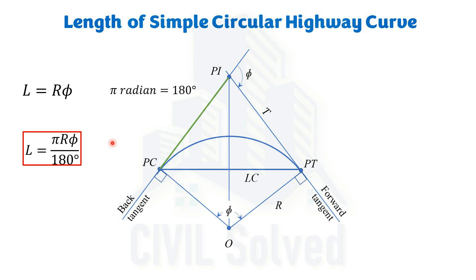So from all the distances we have calculated, in each formula we have observed that radius R and deflection angle φ are the two variables. So if we know the basic data — radius and deflection angle of the curve — then we can calculate the tangent length, long chord, external ordinate, middle ordinate, and also the length of the simple circular highway curve. So this is all from this video. I hope you have understood the concept behind calculating the different lengths in a simple circular curve. Thank you for watching.